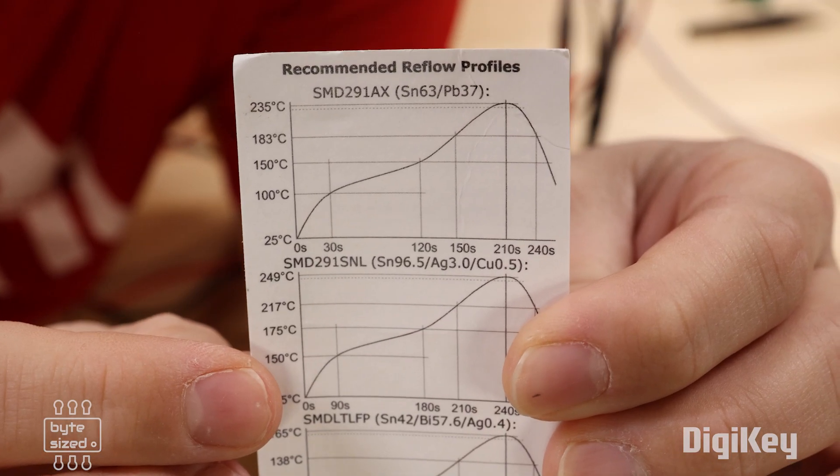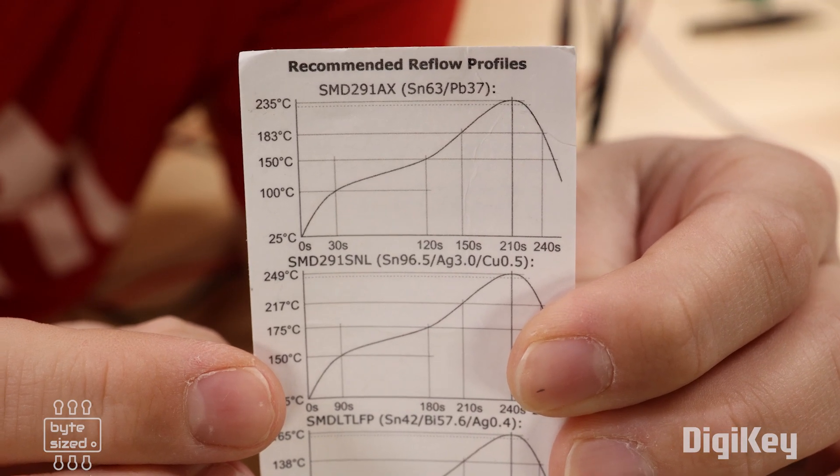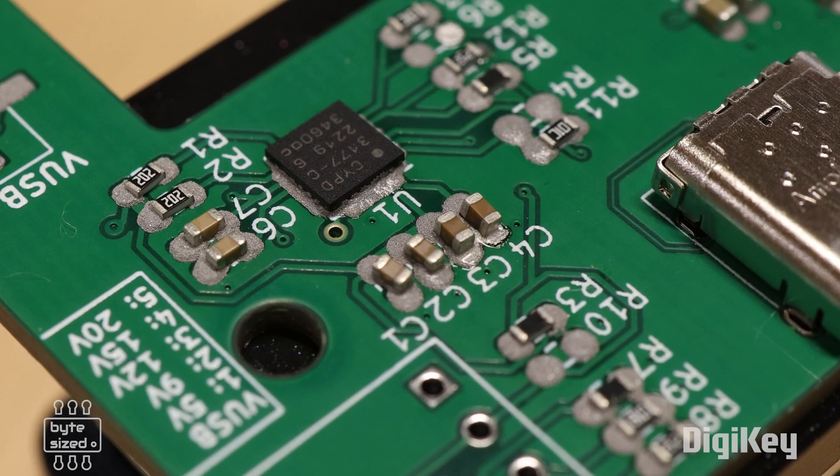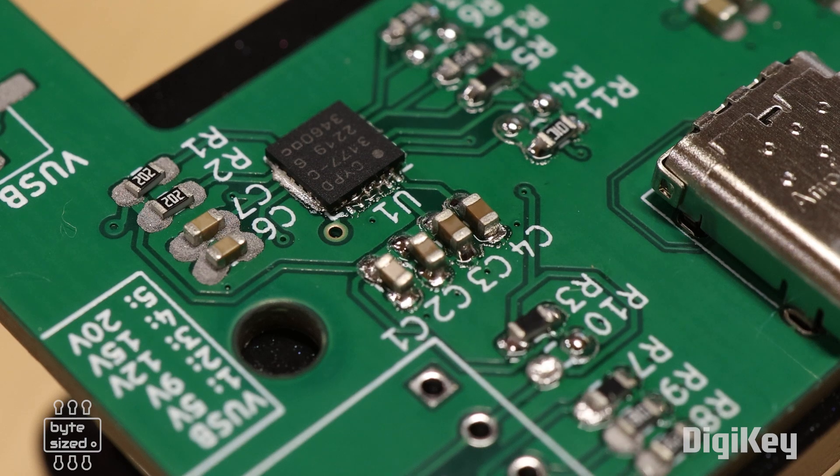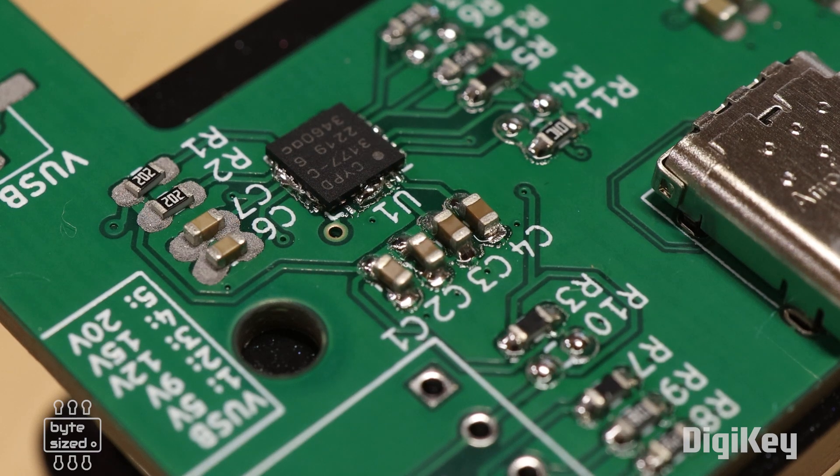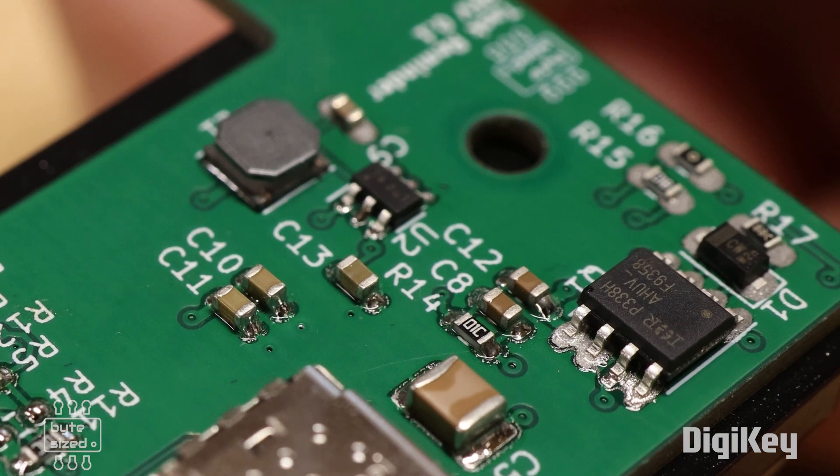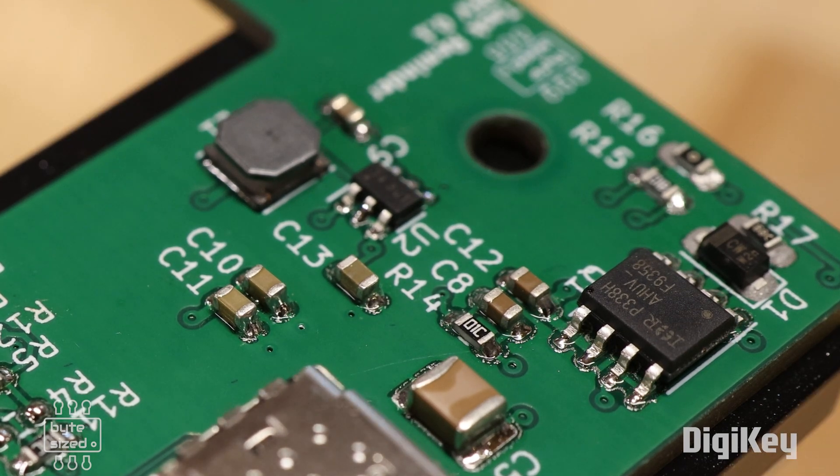I used the solder paste reflow datasheet to set the three temperatures, and then used the onboard timer to let me know when it was time to change to the next preset. This mini hotplate makes this task super easy, and I think the results are great. Watching solder paste change from solid to liquid is another thing I never get tired of. It's so satisfying.